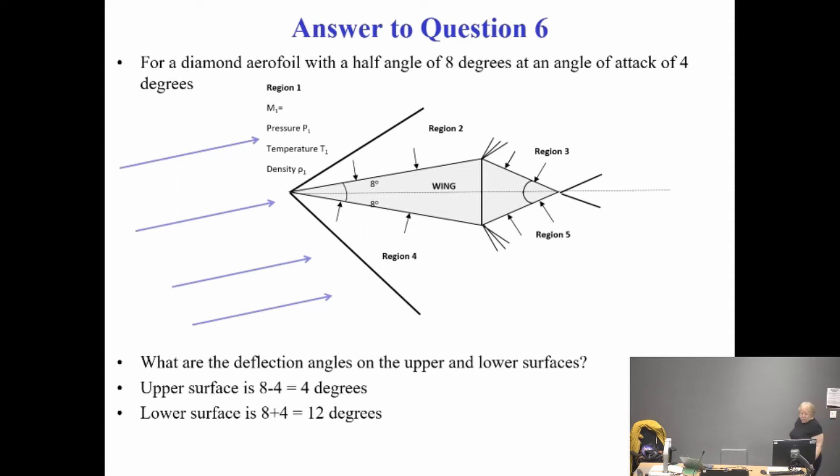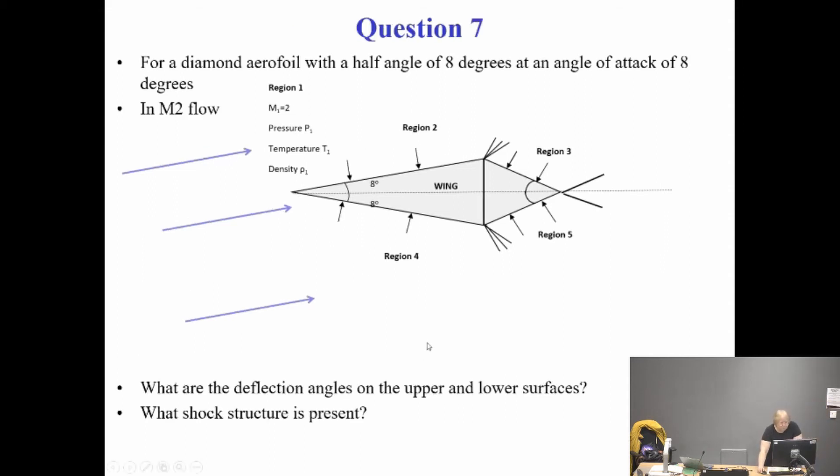What have we got? We've got Mach 2 flow here. A diamond aerofoil, half angle of 8 degrees and angle of attack of 8 degrees. What's your deflection angle then? Trick question, but it's actually reality. The angle of attack is 8 degrees, but the actual half angle of the cone is 8 degrees as well.